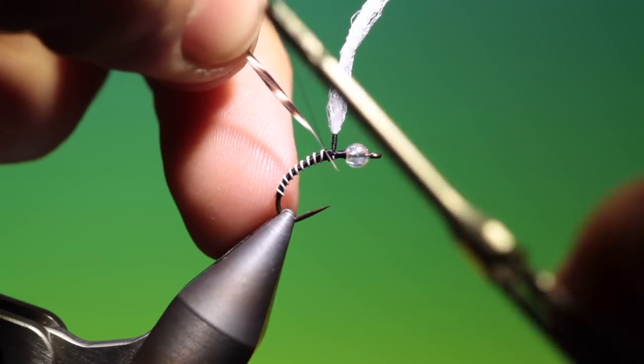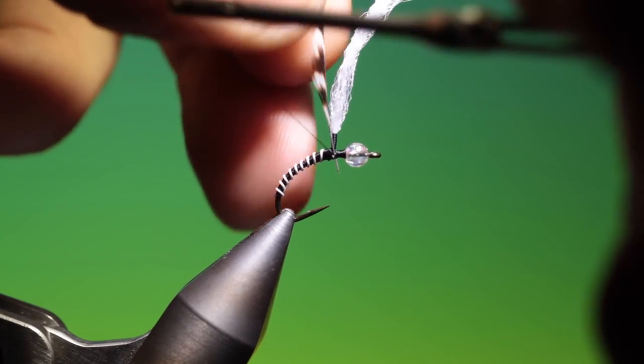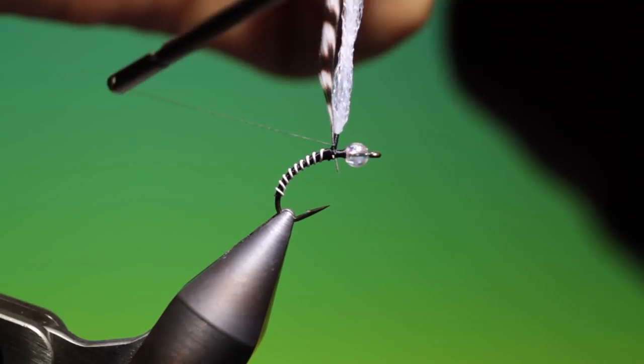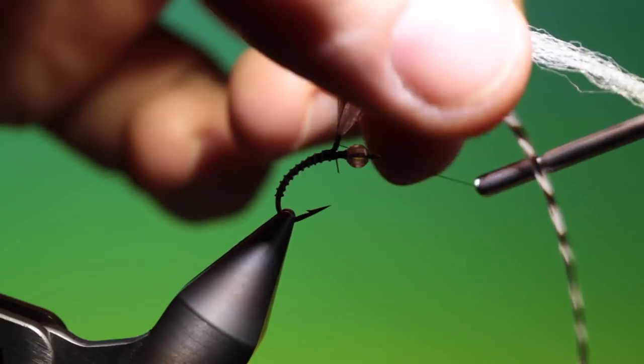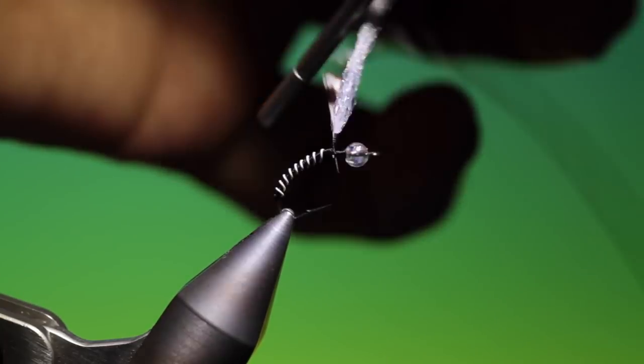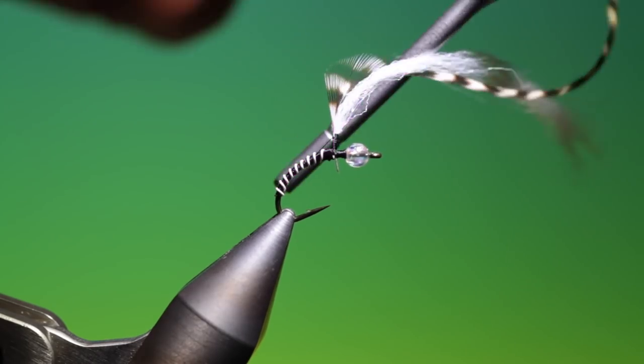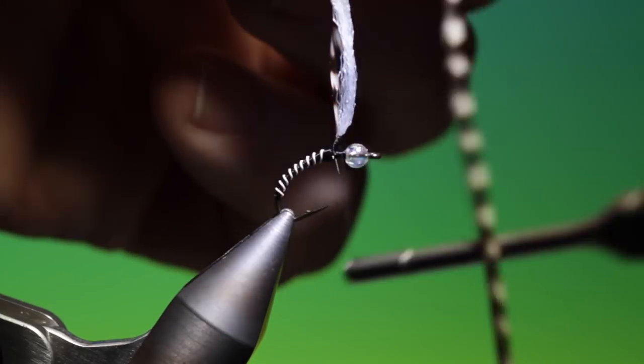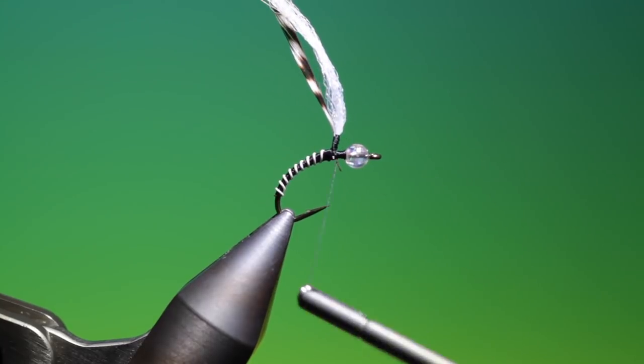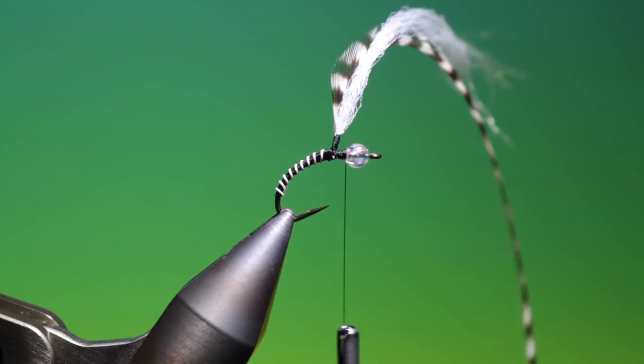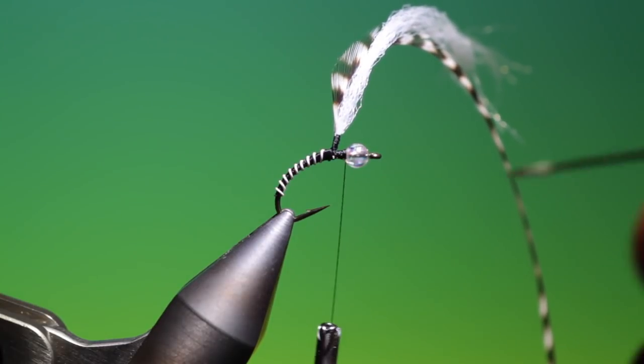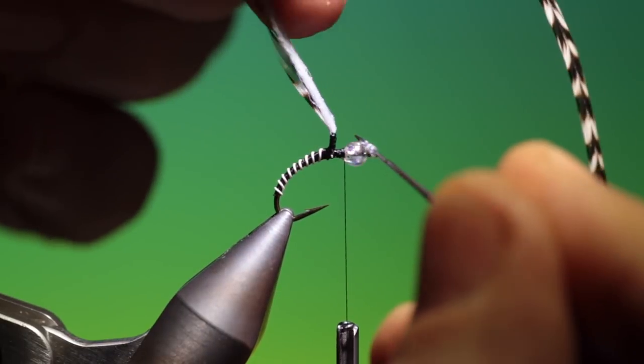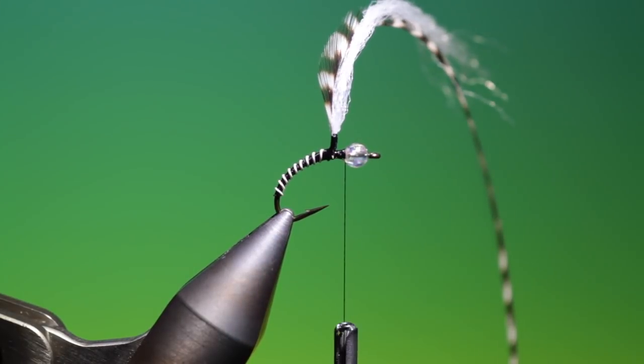Then I've stripped one side off a grizzle hackle which we're going to use for the parachute. So we'll just tie this in at the post base. Back down again. Tie the end in. There we go, very good. And what I like to do is just take a tiny drop of varnish or head cement, super glue, whatever you use, onto the post there. That just stiffens it up a wee bit.